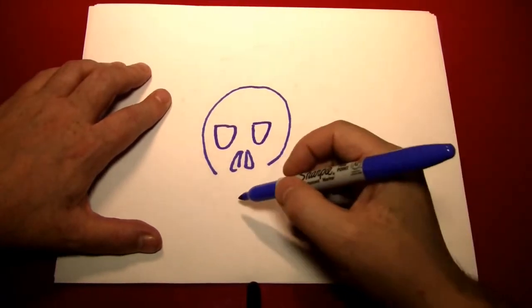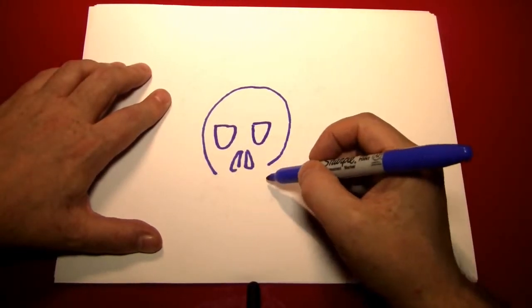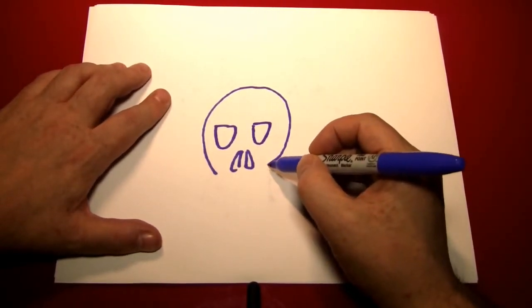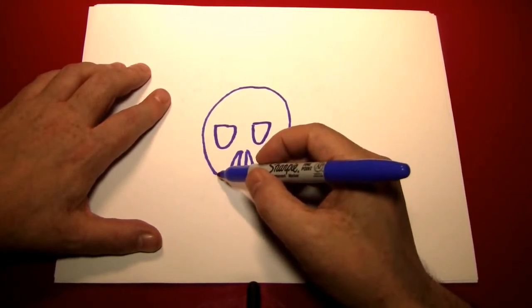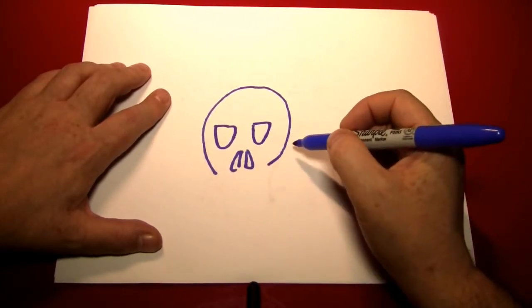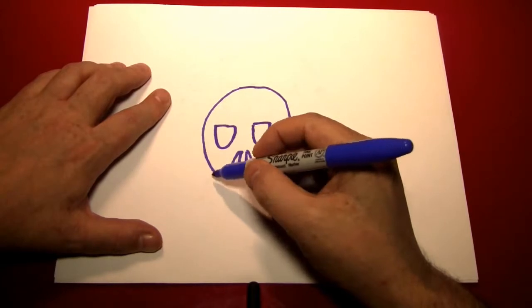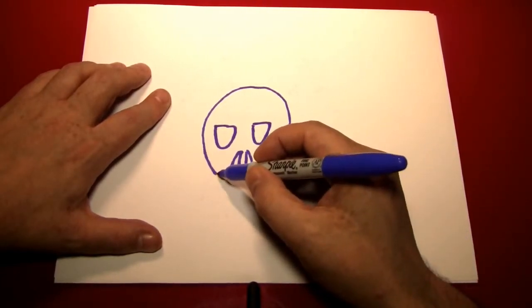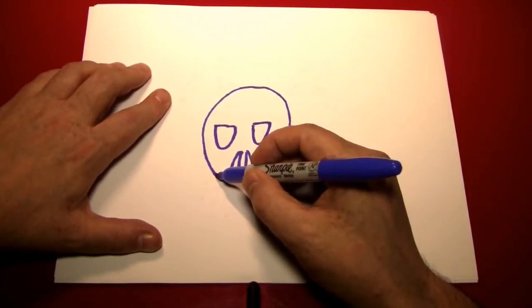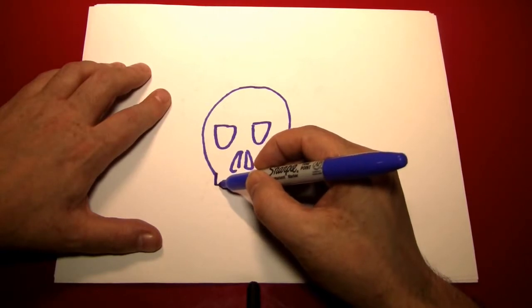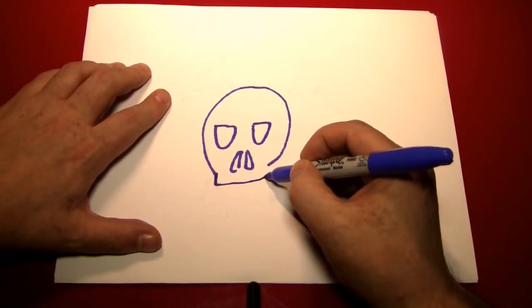Next, what we're going to do is we're going to make the top part of the jaw by connecting this to this. And if you've noticed, these are now the cheekbones. And we're going to connect them by going down just a little bit from here and going straight across like that.